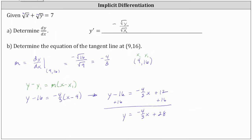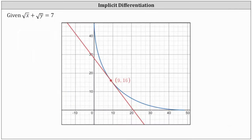So we have the equation of the tangent line at the point 9 comma 16 in both point slope form and slope-intercept form. Looking at this graphically, the curve given by the implicit equation is graphed here in blue. The point of tangency is the point 9 comma 16, and the equation for the red tangent line is y equals negative 4 thirds x plus 28, which verifies our work is correct.